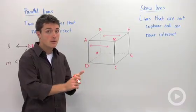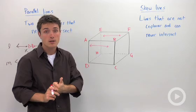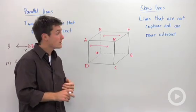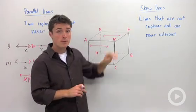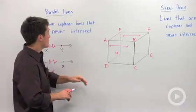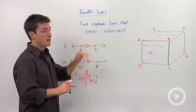You're going to say they could be skew. Parallel lines must be coplanar and they never intersect.